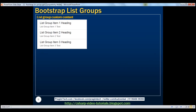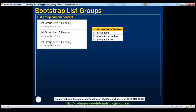Now let's discuss creating list groups with custom content. When creating list groups with custom content, we can use nearly any HTML we want. I'm going to make use of three Bootstrap classes: list-group-item, list-group-item-heading, and list-group-item-text. Within the list group we have three list group items. Each list group item is an anchor element, meaning when we click on any of them we will be redirected to the specified website. Within each anchor element we also have two other elements: one displaying the list group item heading and another displaying a paragraph of text. On the anchor element we use the list-group-item class.